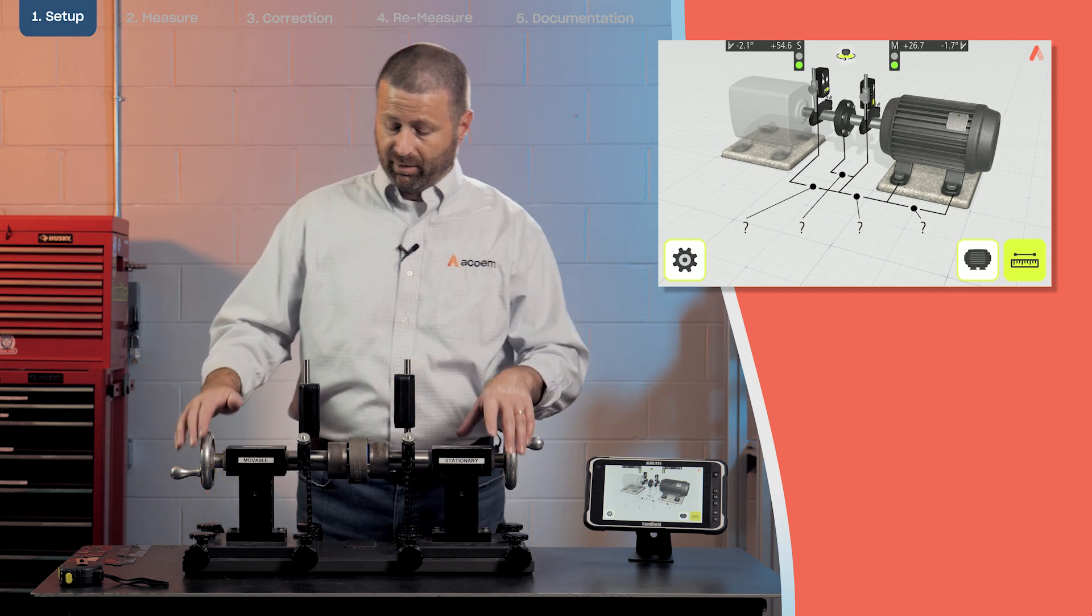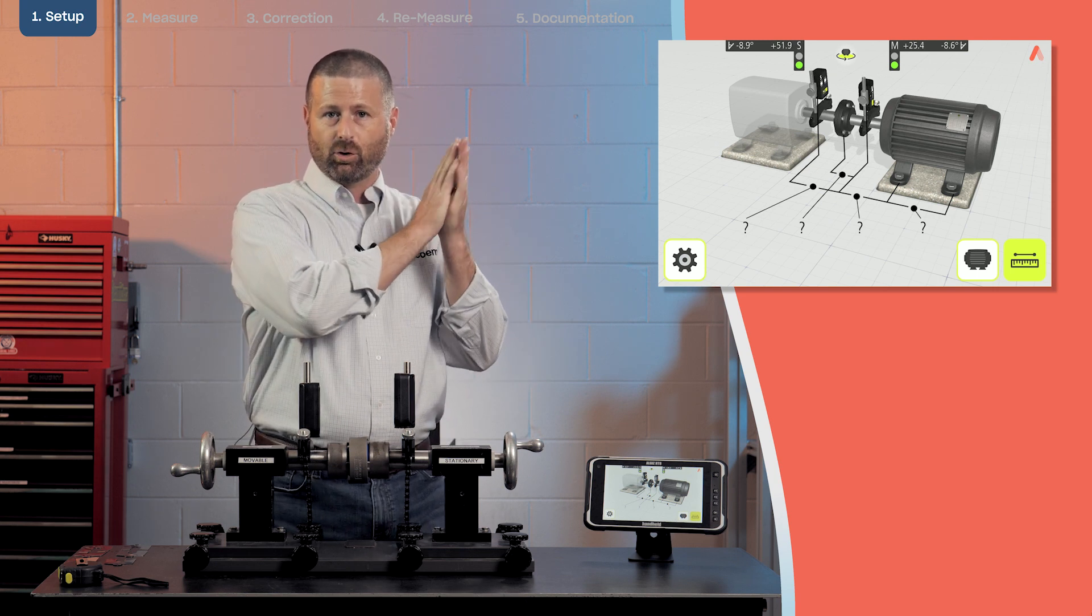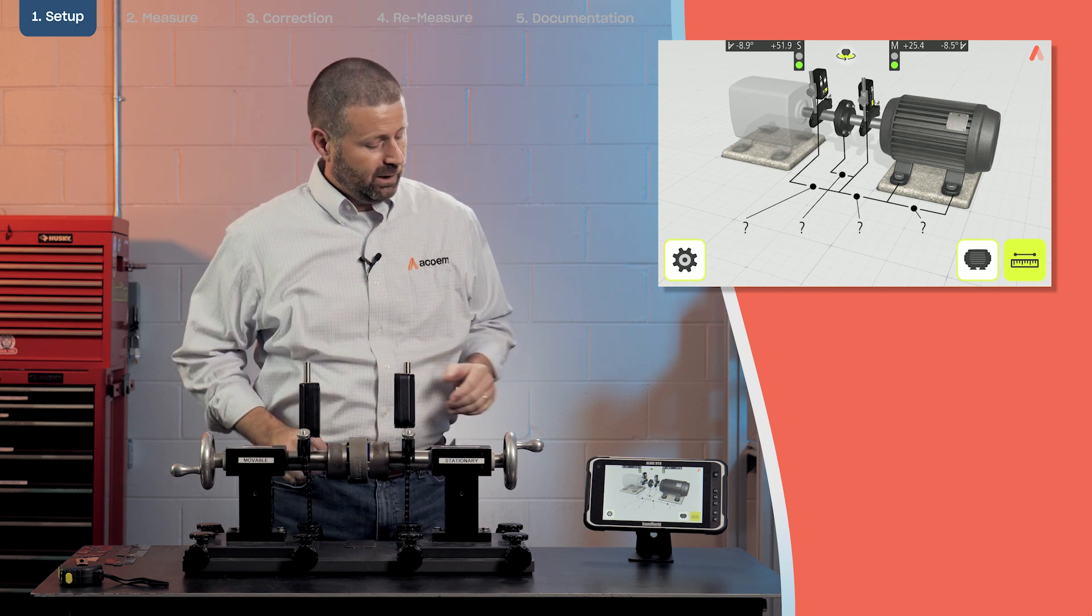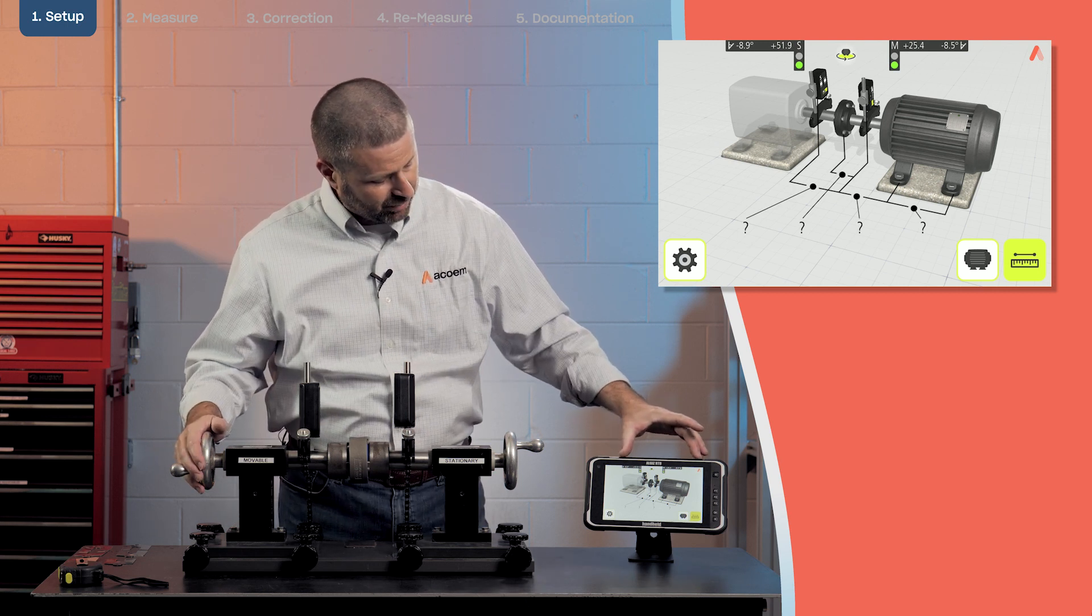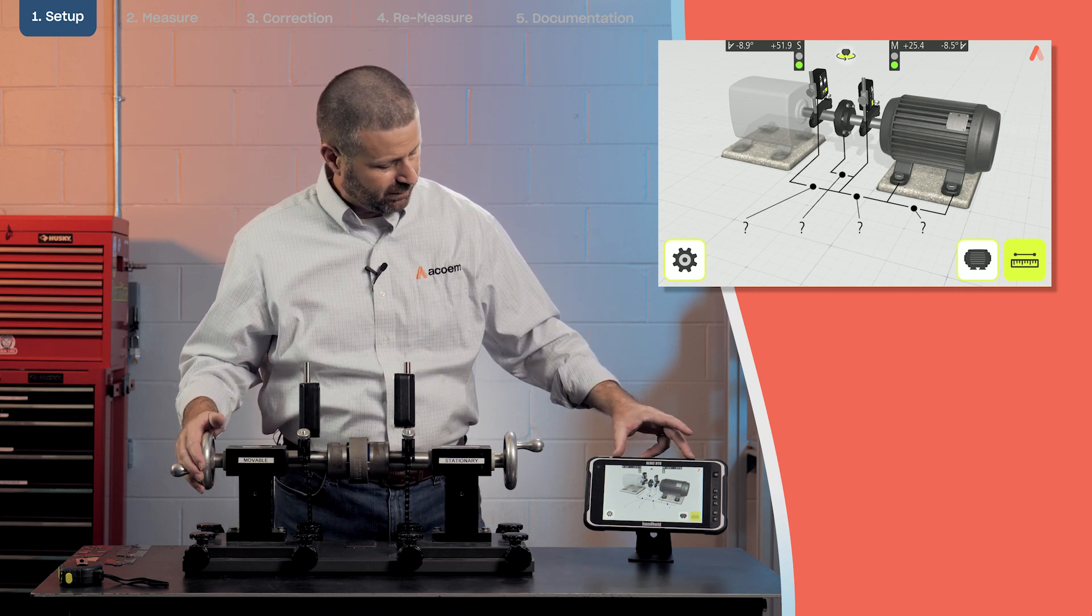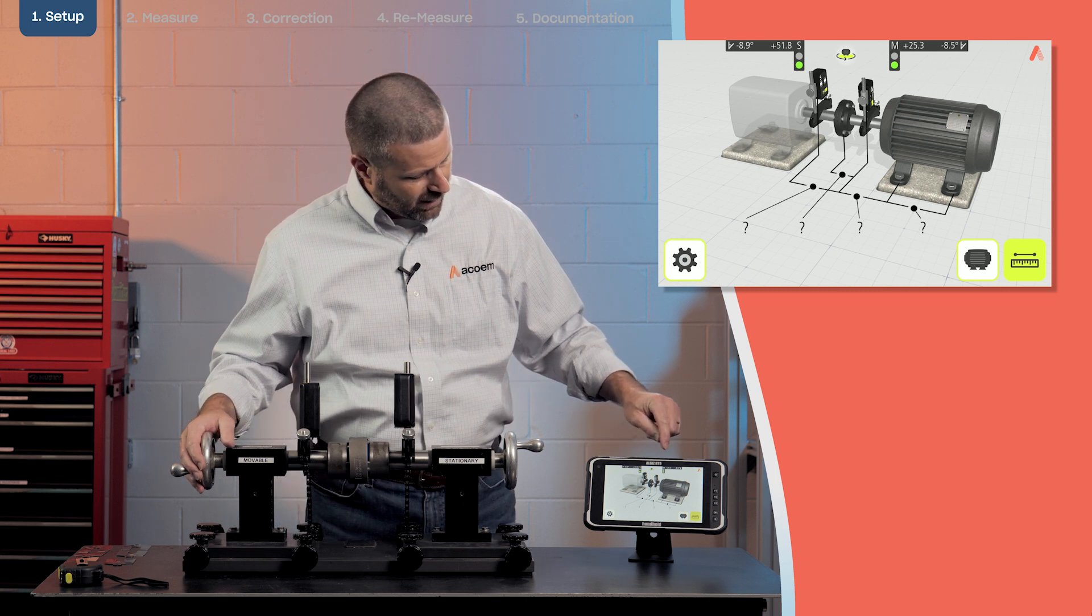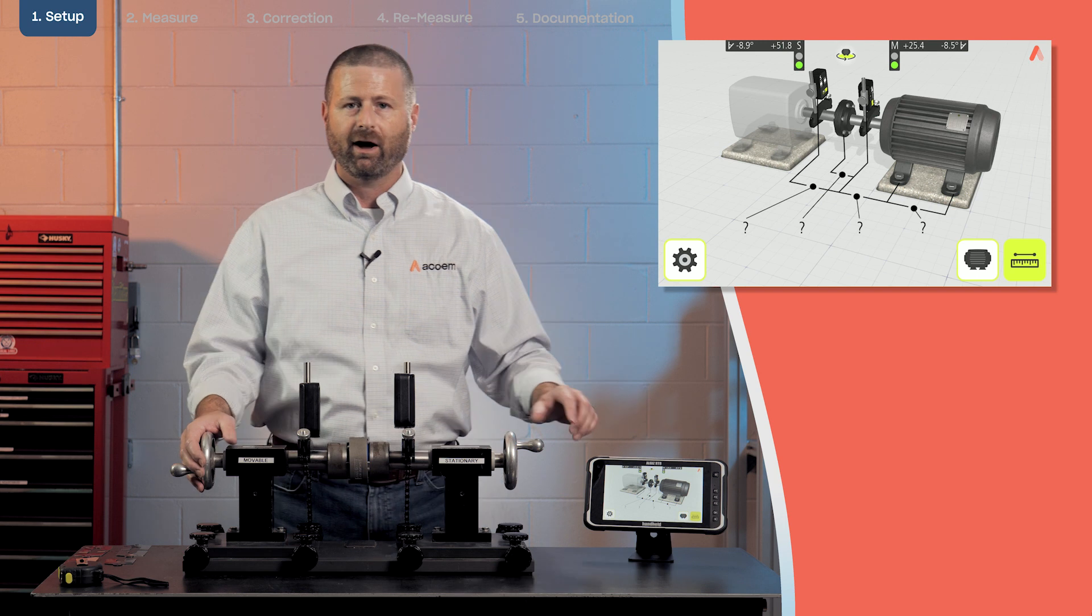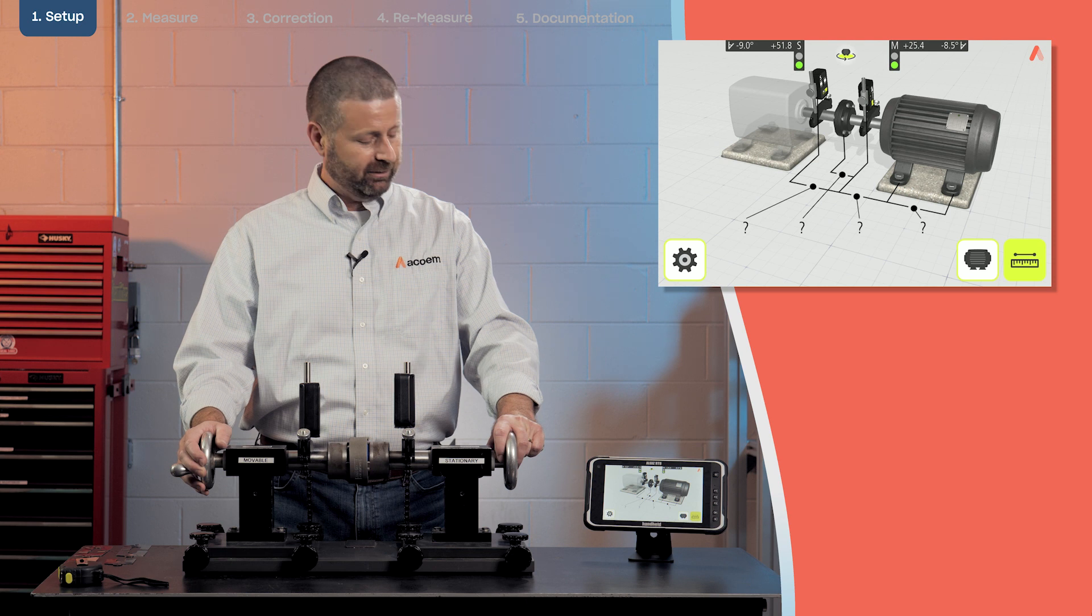The next step is also going to be that our sensors need to be square to one another. We can double check that by looking at the angle display on the display unit. In this case, I have the S sensor at 8.9 and the M sensor at 8.5. These should be within about one degree of one another to start off with.